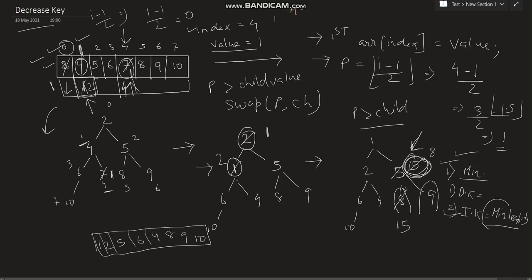In case of max-heap, it is reversed. For increase key in max-heap, we need to do parent comparison. And for decrease key in max-heap, we need to perform max-heapify. Right now I have explained using the example of min-heap. This is the concept of decrease key and increase key.